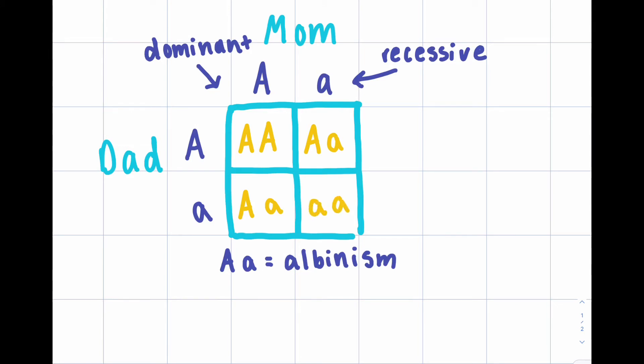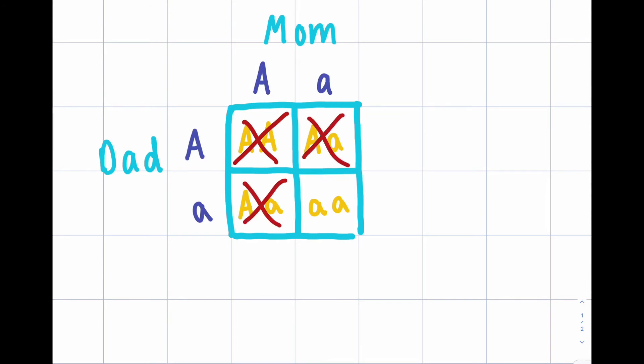Now, baby turtle number four has two lowercase a's. Baby turtle number one, two, and three all have the normal pigmentation. However, baby turtle number four is albino, and that would be Rosie.